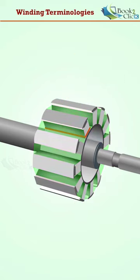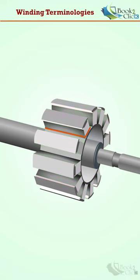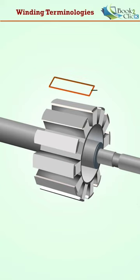The gaps provided in the core to accommodate the conductors are called slots. A conductor in one slot connected to a conductor in another slot is called a turn.